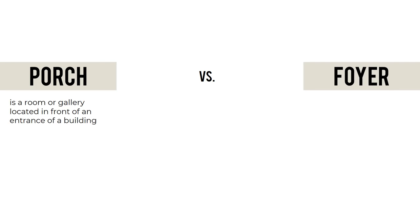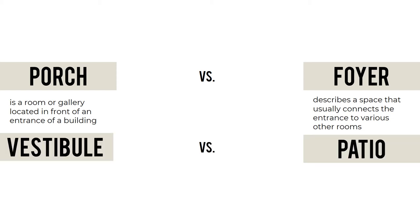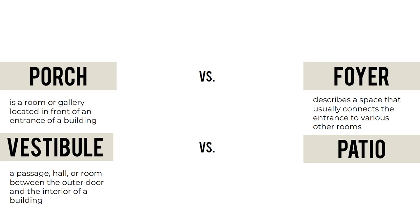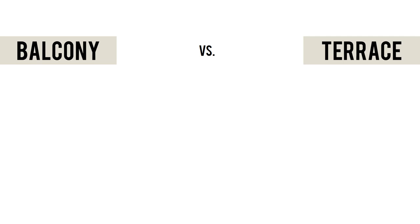A porch is a room or gallery located in front of the entrance of a building. A foyer connects the entrance to various other rooms — like the lobby of the house. A vestibule is a passage or room between the outer door and the interior of a building. A patio is a living space outside the house — either a garden or a simple relaxing area, covered or uncovered.